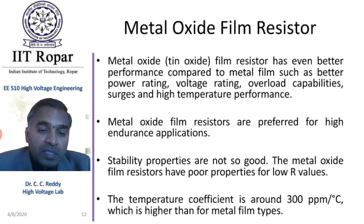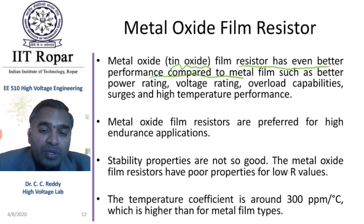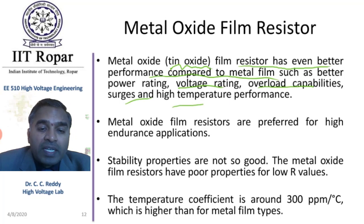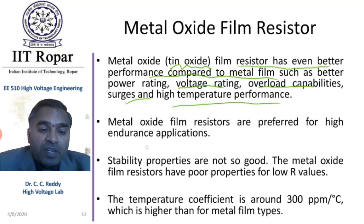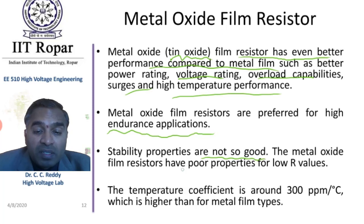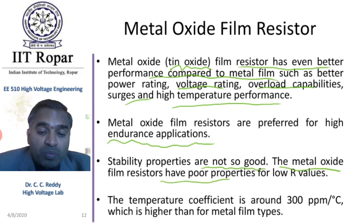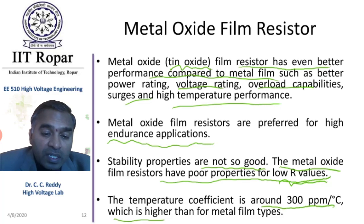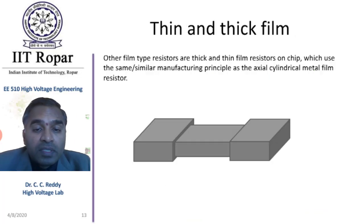Metal oxide film resistors: a thin oxide layer is used. They offer even better performance compared to metal film in terms of power rating, voltage rating, overload capability, surge capability, and high temperature performance. Metal oxide film resistors are preferred for high endurance, long-term purposes. However, the stability properties are not as good as metal film, and they have poor properties for low resistance values, with a higher temperature coefficient than the metal film type.